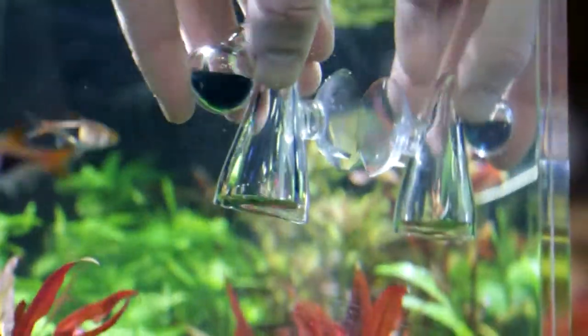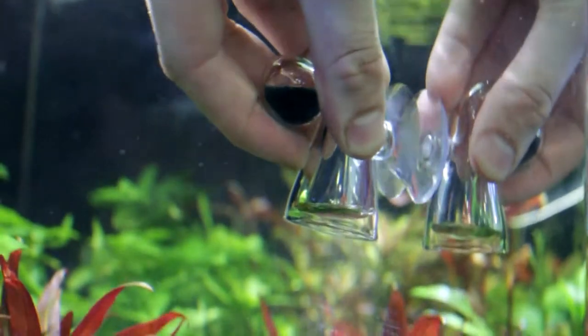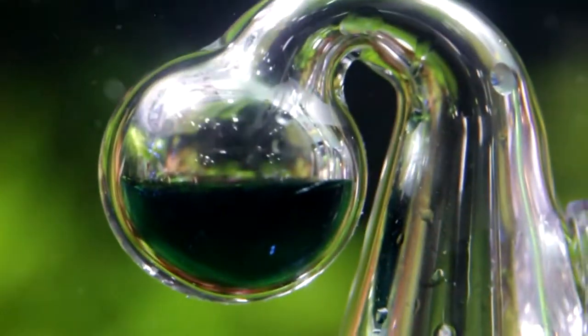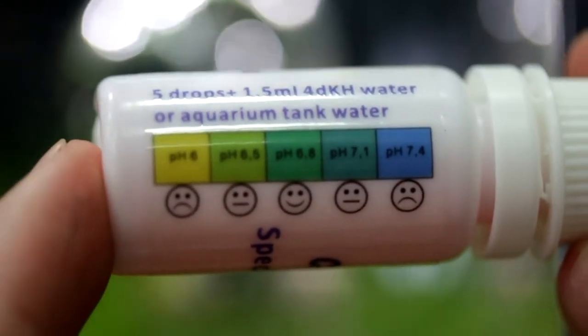This device changes color depending on the amount of dissolved CO2 in the water. It comes with a diagram on both the back of the box and the back of the reagent bottle.